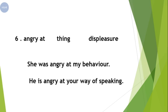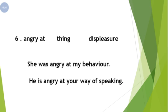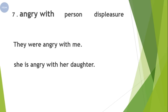So with 'angry' we use 'at' when referring to a thing. Now our next phrasal verb is 'angry with.' Both 'angry at' and 'angry with' have the same meaning — displeasure, narazgi — but 'angry with' is used for a person. Angry with is used for a person, jabke angry at wo kisi cheez ke liye istamal hota hai.